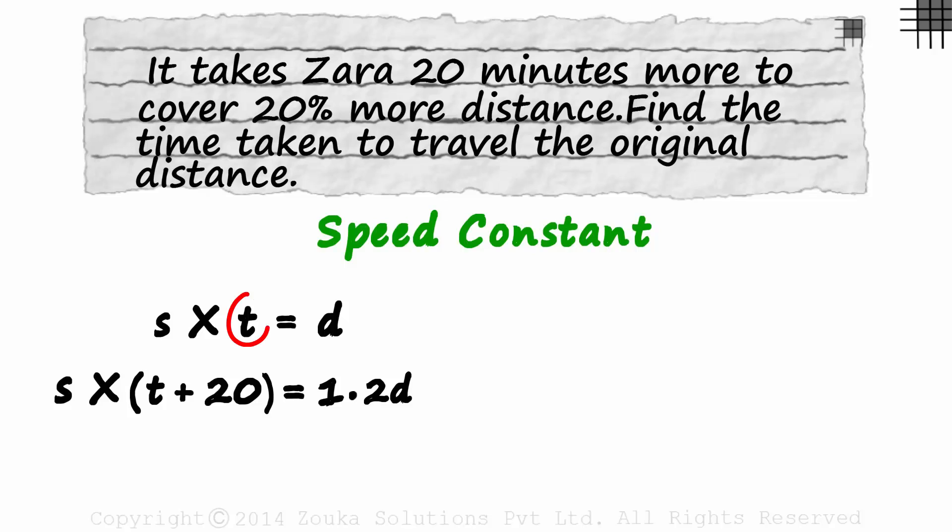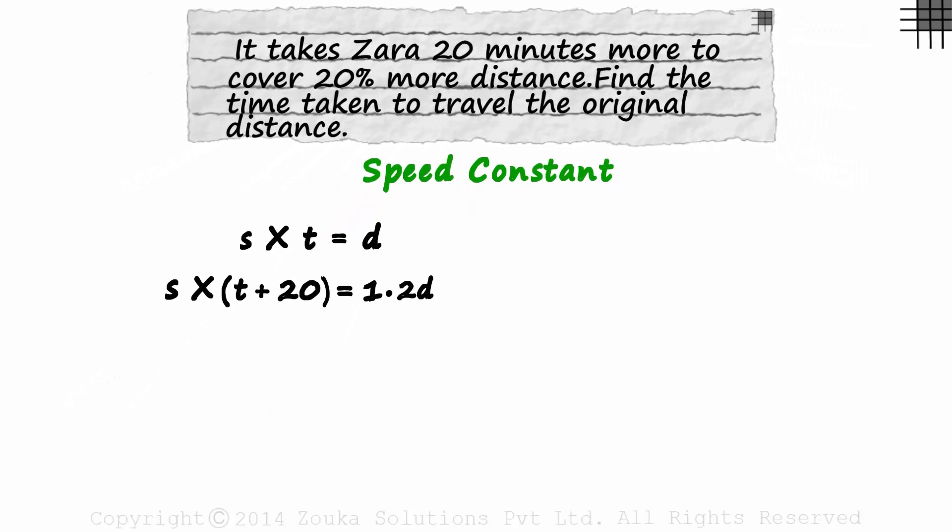We have to find the time taken to travel the original distance. We need to find T. Are these two equations enough to give us T? At the first look, you would probably say no as there are three variables and just two equations. But let's see if we can work it out. We know that the speed S is the same in both cases. Let's try equating S.